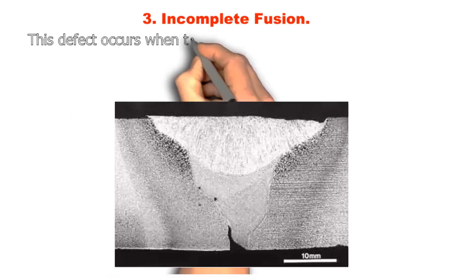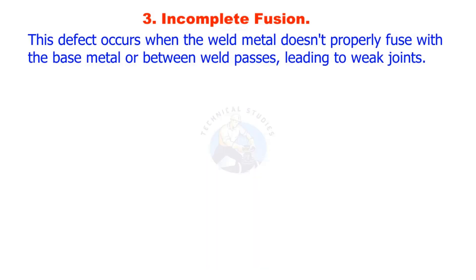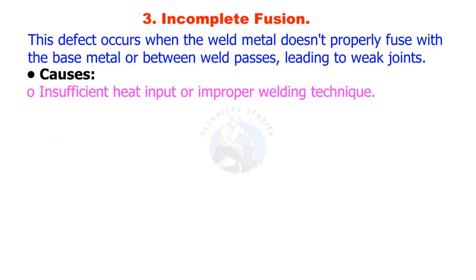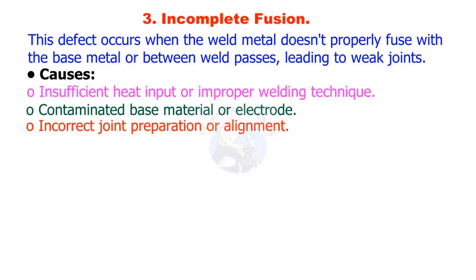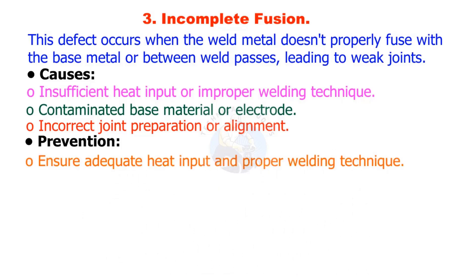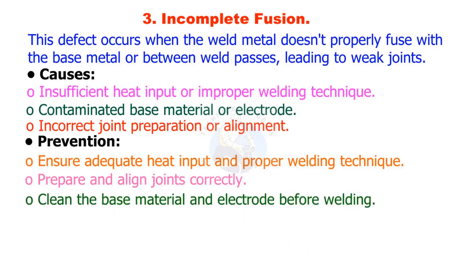Incomplete fusion occurs when the weld metal doesn't properly fuse with the base metal or between weld passes, leading to weak joints. Causes include insufficient heat input or improper welding technique, contaminated base material or electrode, and incorrect joint preparation or alignment. Prevention: ensure adequate heat input and proper welding technique, prepare and align joints correctly, and clean the base material and electrode before welding.